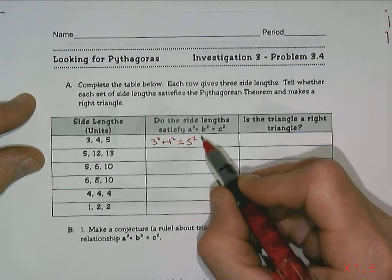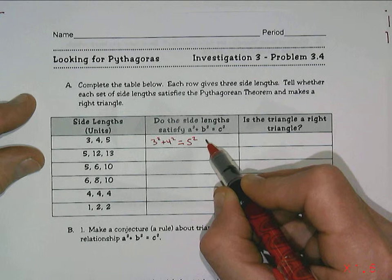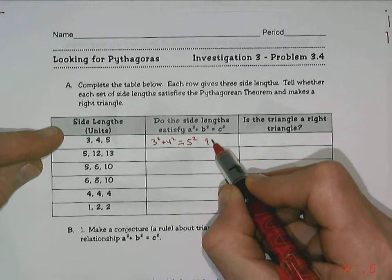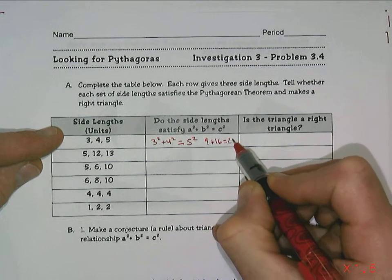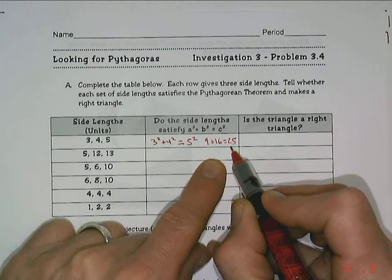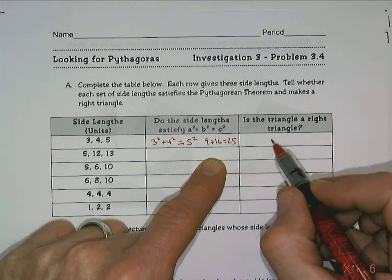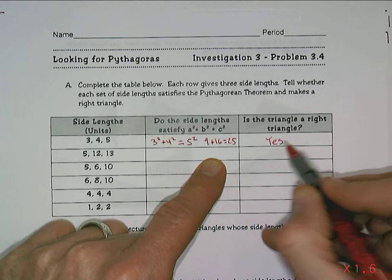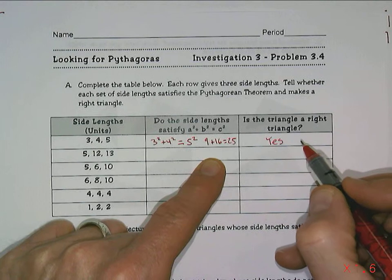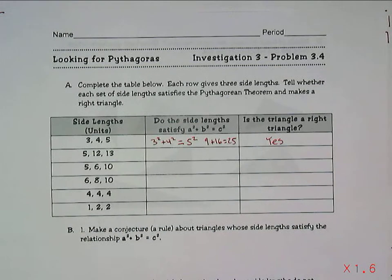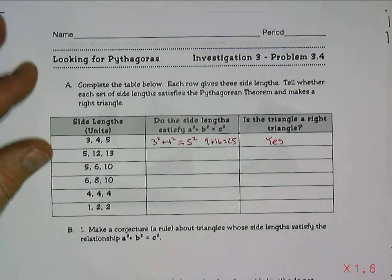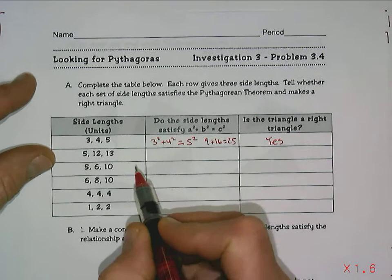And so we can do that. 3 squared is 9, 4 squared is 16, 5 squared is 25. 9 plus 16 does equal 25, so the answer is yes, this is a right triangle. It has to be, according to the Pythagorean Theorem, if we can do a² + b² = c².